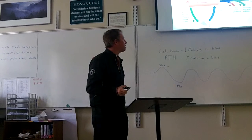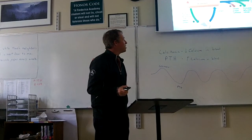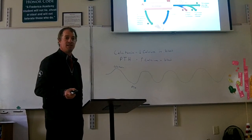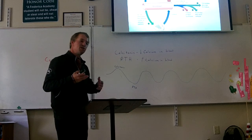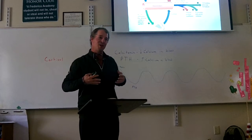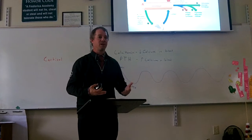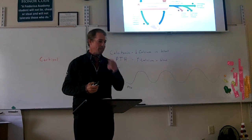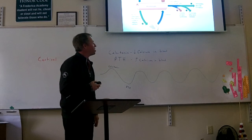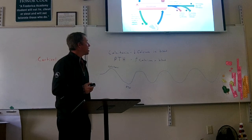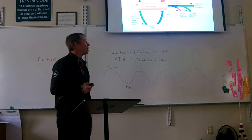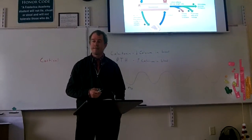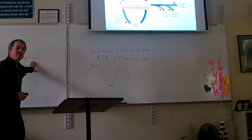The hypothalamus releases CRH, which is called corticotropic releasing hormone, which then activates the anterior pituitary to release ACTH, which is called adrenocorticotropic hormone, which then stimulates the adrenal gland to release a hormone called cortisol. Cortisol is one of the five adrenal hormones. Cortisol is released by the adrenal cortex, the outside of the adrenal gland.